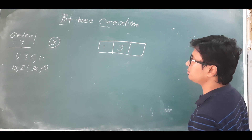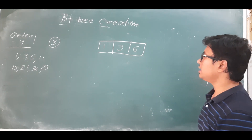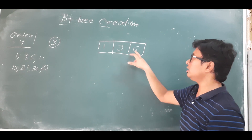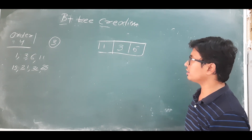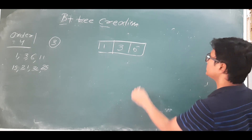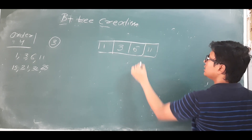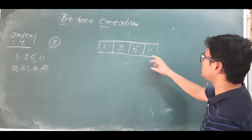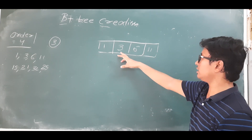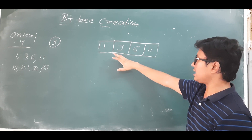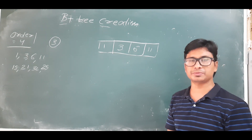Then I want to insert 6 — no problem. Remember, all the elements in a node should be in increasing order. Next I need to insert 11, which is greater than 6, so it will come here. If I insert 11 then there is an overflow. Since it is in a leaf node we have to follow three steps.